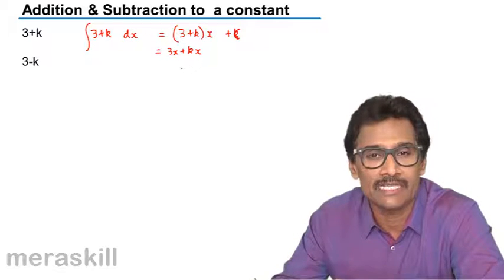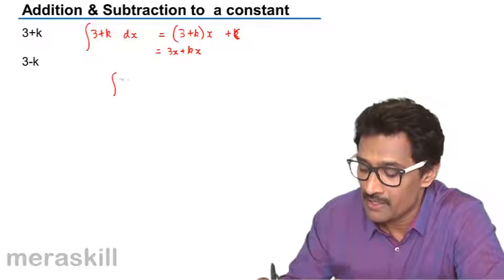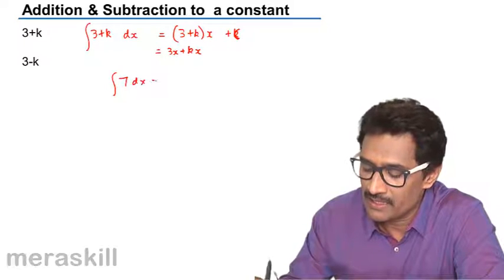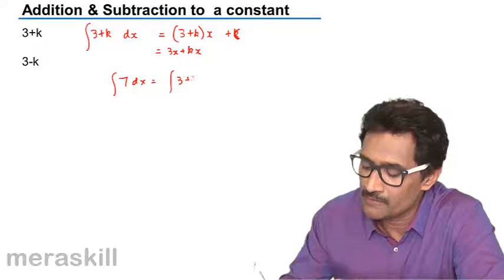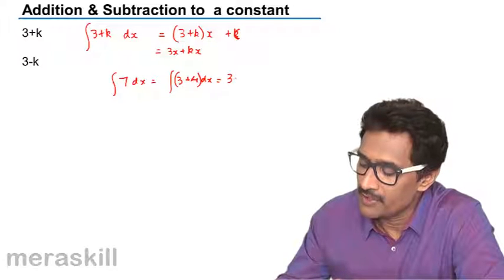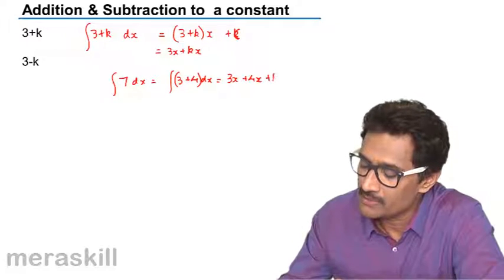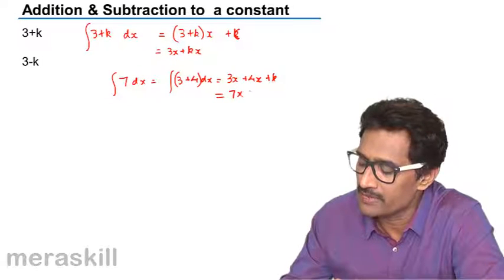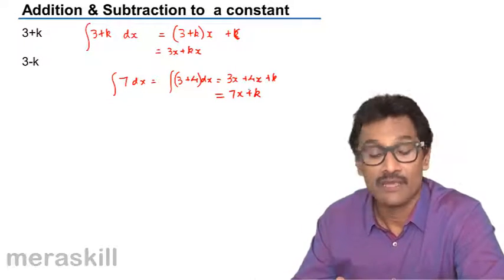Same is valid in case of 3 minus k. Let's take an example. Suppose you have integral of 7 dx, we can write it as integral of 3 plus 4 dx, which is going to be nothing but 3x plus 4x plus constant, which is nothing but 7x plus some constant.